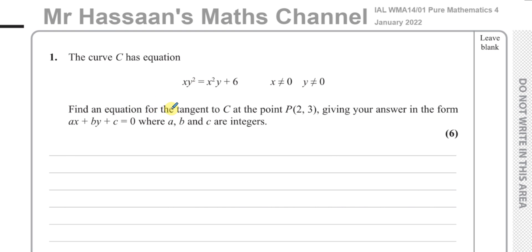We have to find the equation for the tangent to the curve C. We're given the equation of this curve in a bit of a strange form: XY squared equals X squared Y plus 6, where X and Y both cannot be 0. Find an equation for the tangent to the curve C at the point (2, 3), giving your answer in the form AX plus BY plus C equals 0 where A, B and C are integers.